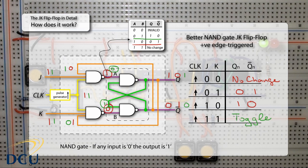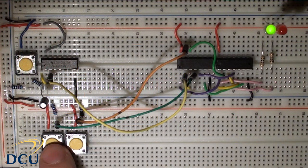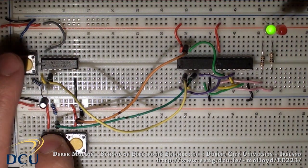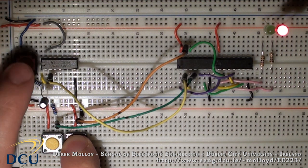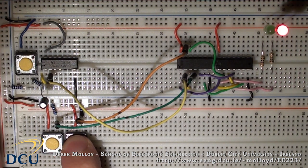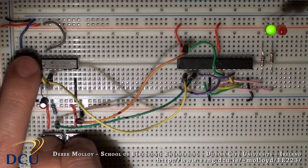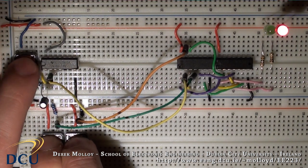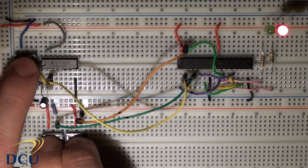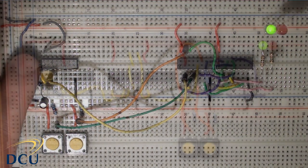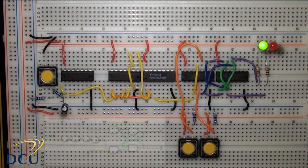Here I've built the JK flip-flop using NAND gates but left out the pulse generation circuit, using a Schmidt-trigger clock directly. Setting and resetting works fairly well, but the big problem arises when J=K=1: without a pulse generator, the Q and Q-bar output lines remain active and feed back to the input during the clock, producing unpredictable outputs.